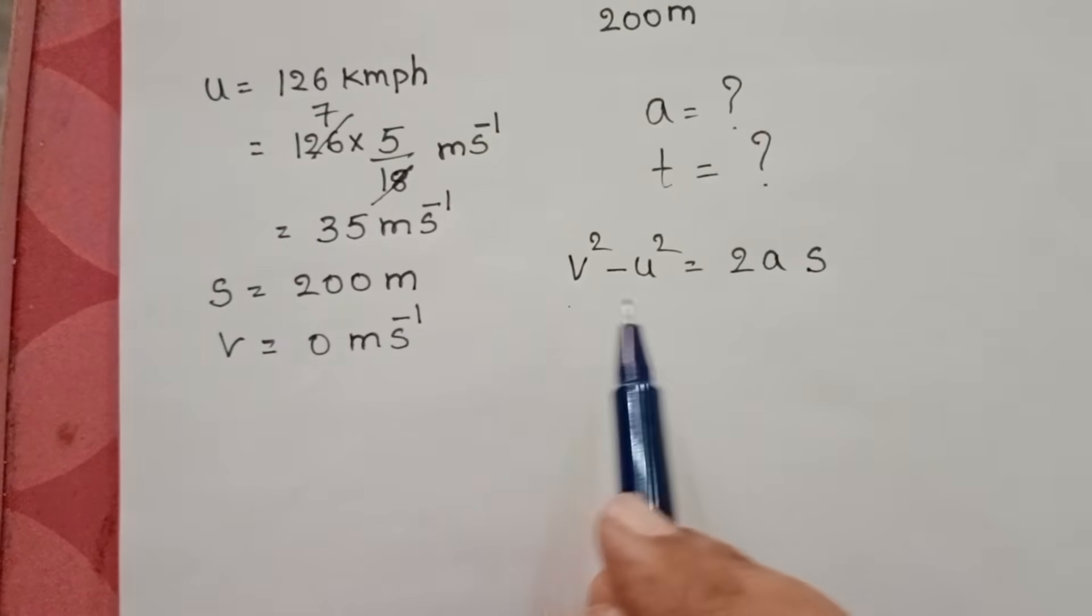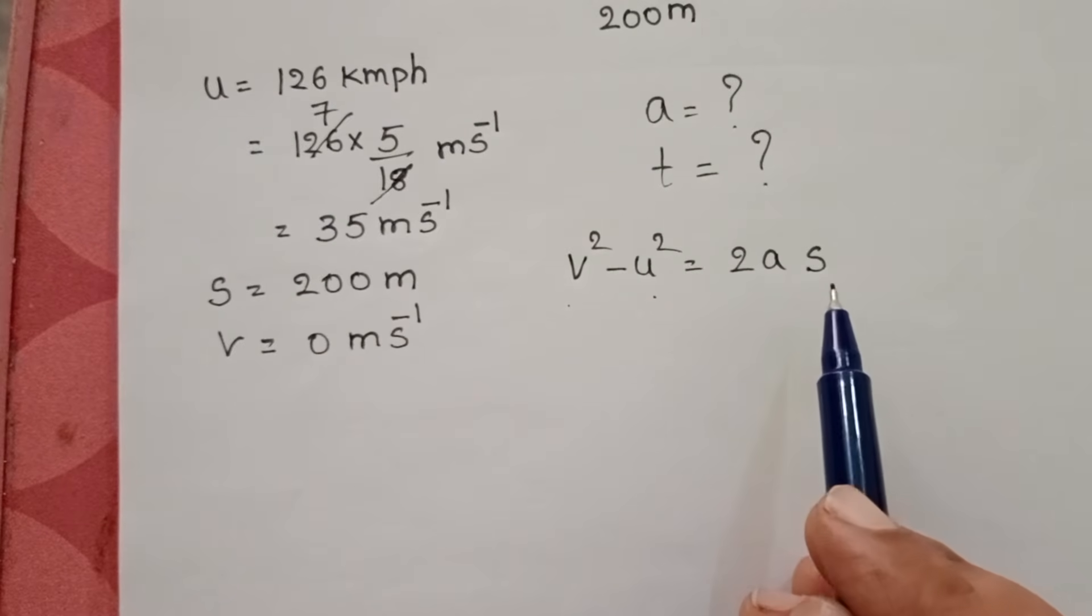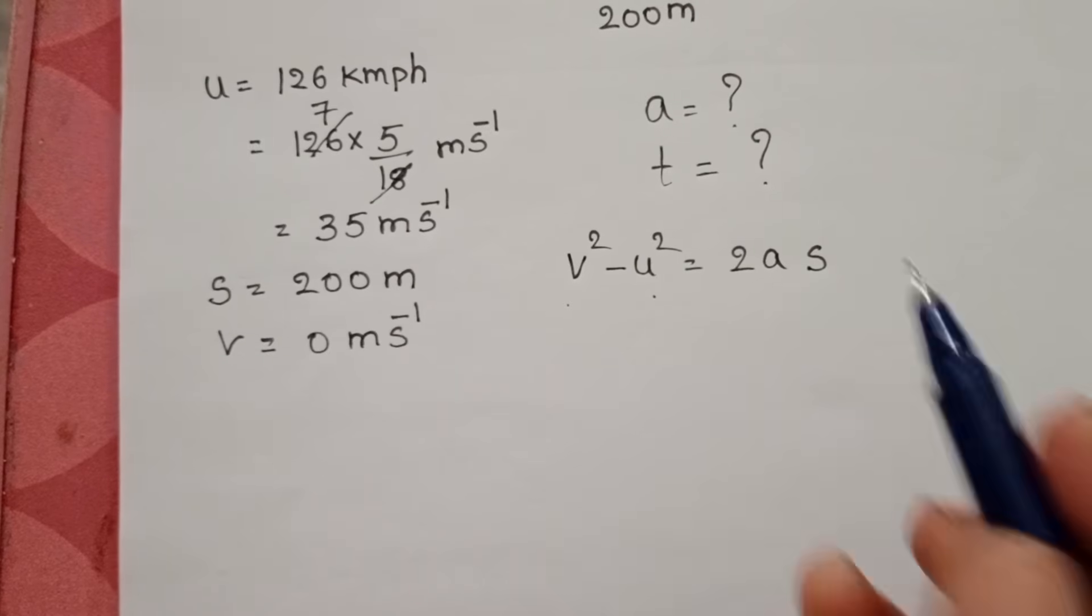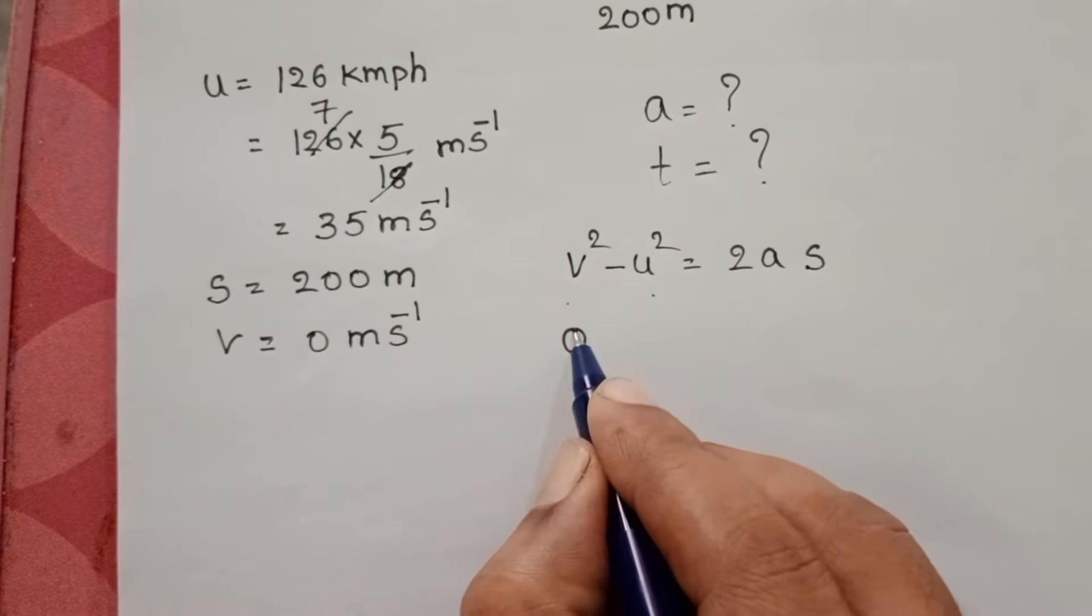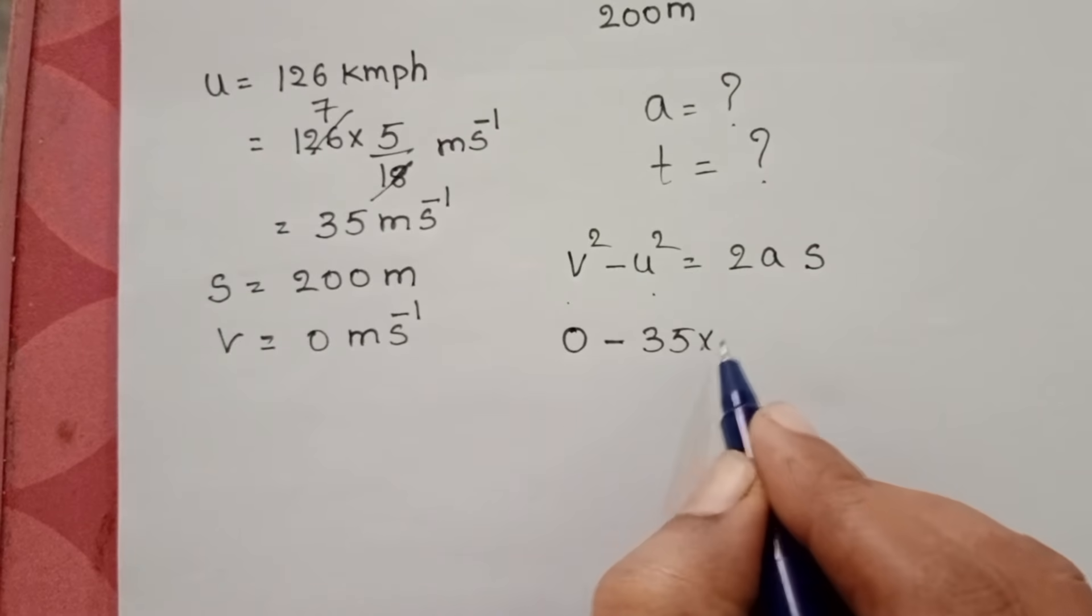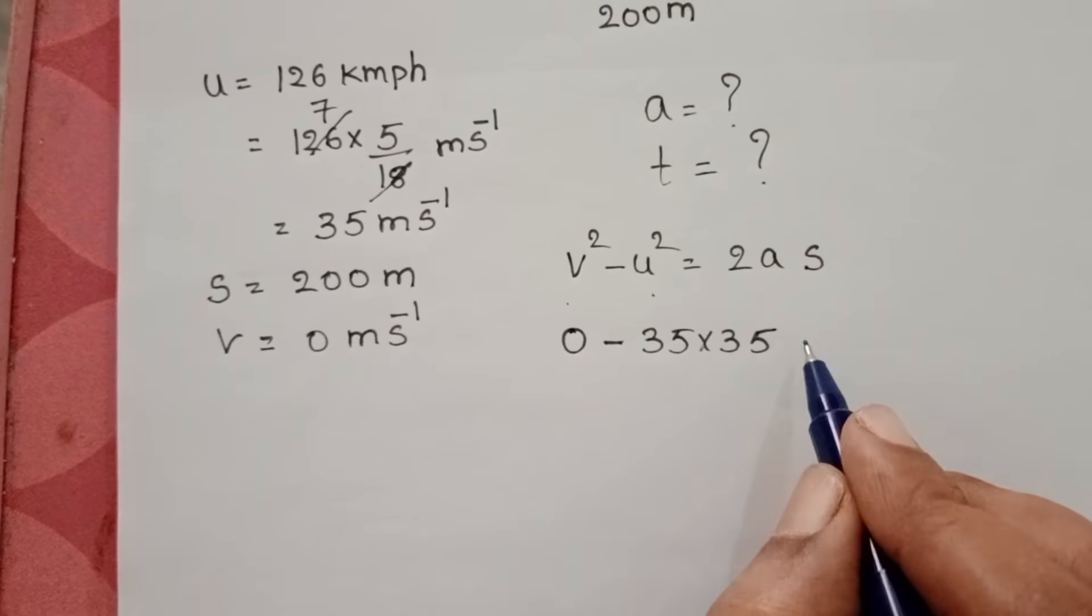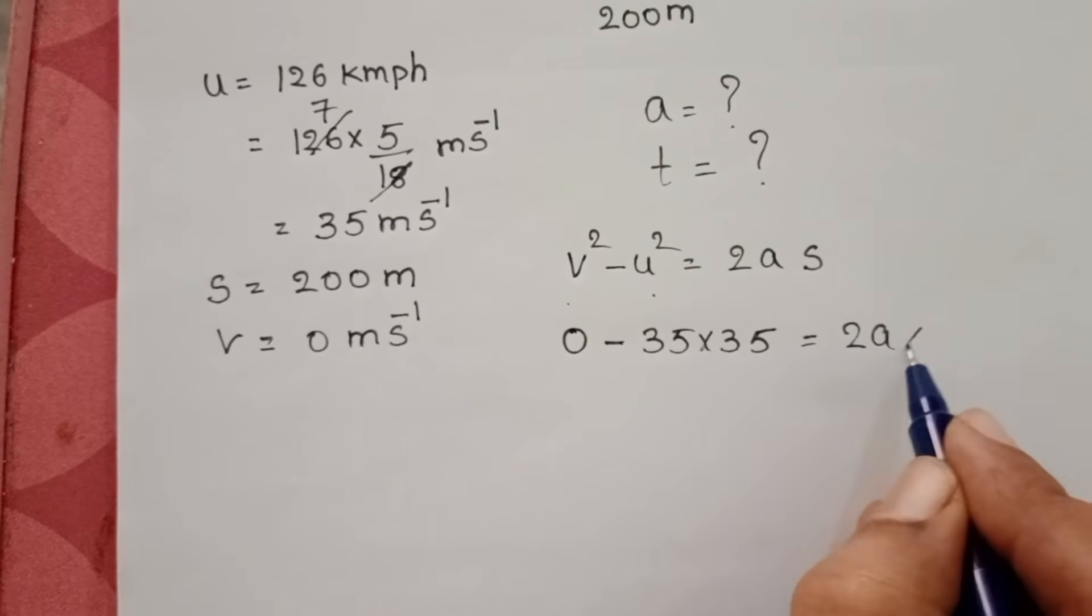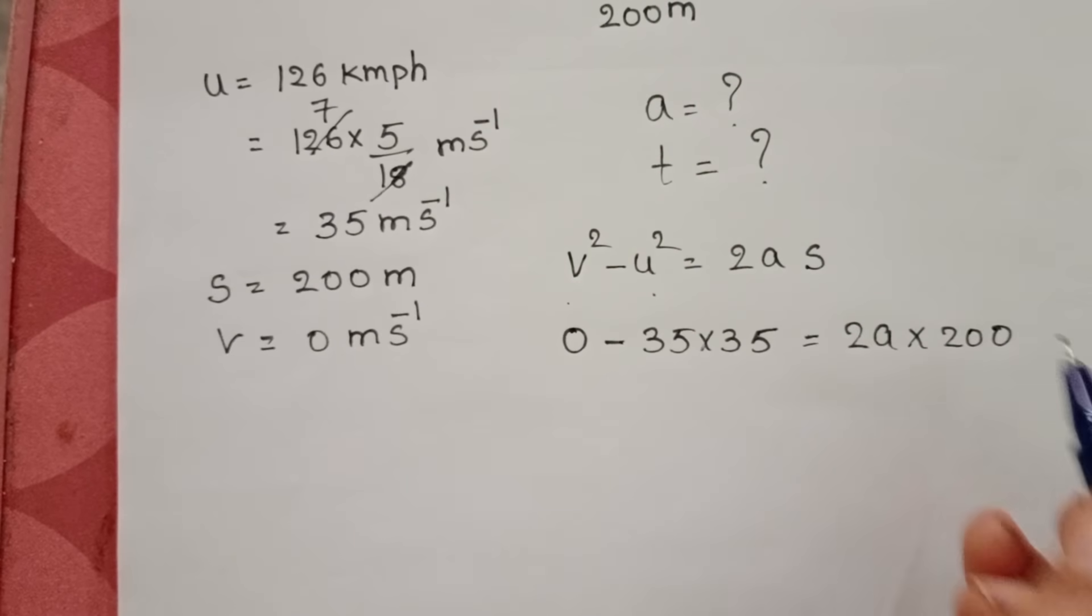Here we know final speed, initial speed, and also distance. By using this, find out the retardation of the car. Final speed is 0, initial speed 35 times 35 because u squared is there, 2A times distance is 200 meters.